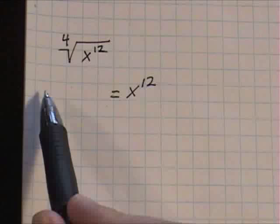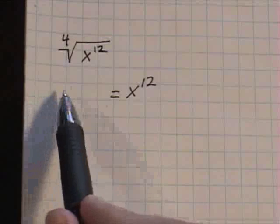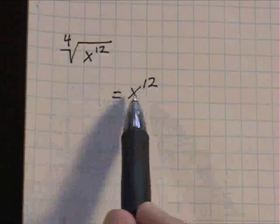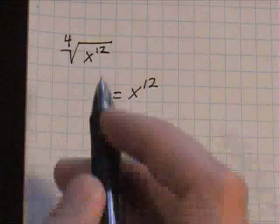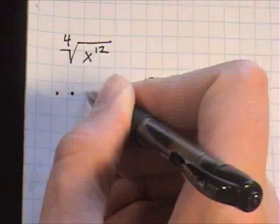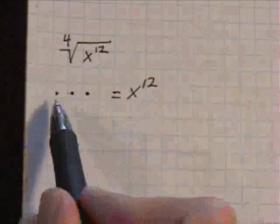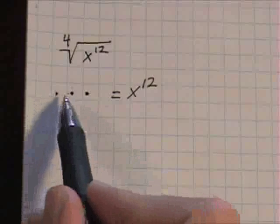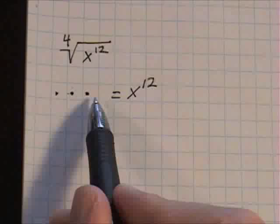So what number that appears, it's the same number that appears four different times will equal x to the twelfth power. So let's just write in three different little multiplication signs. So it's going to be one, two, three, four numbers, equal factors.